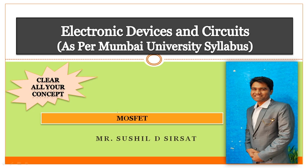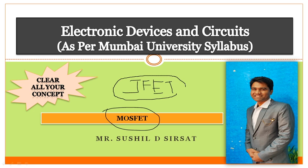In the previous lectures, we have discussed about what JFET is. We have seen JFETs — their working and their principle. N-channel and P-channel were discussed. We have also seen BJTs. There are two types of BJTs: bipolar junction transistors — NPN and PNP. JFET again has two types: N-channel and P-channel.